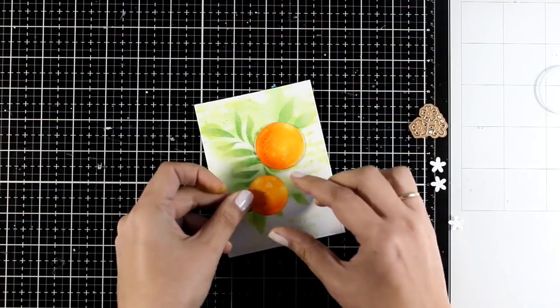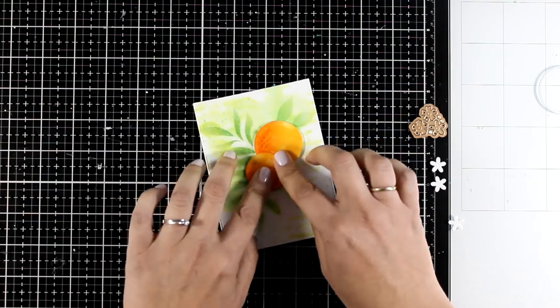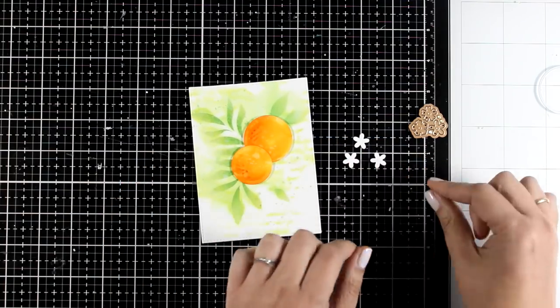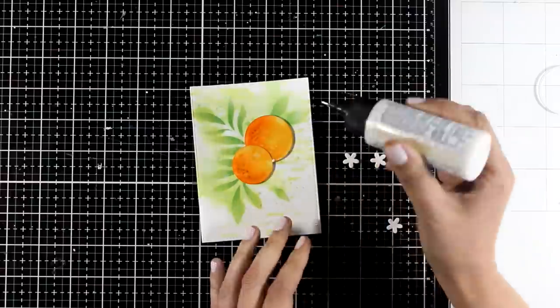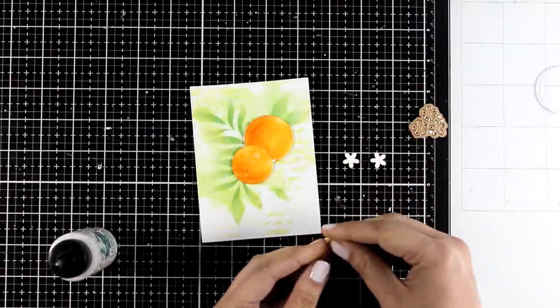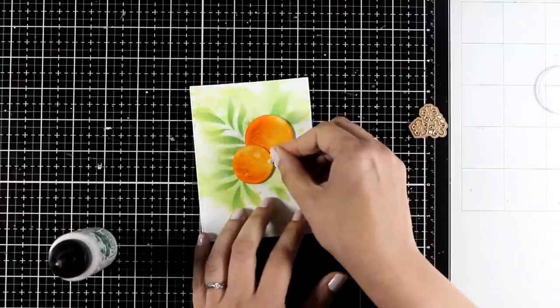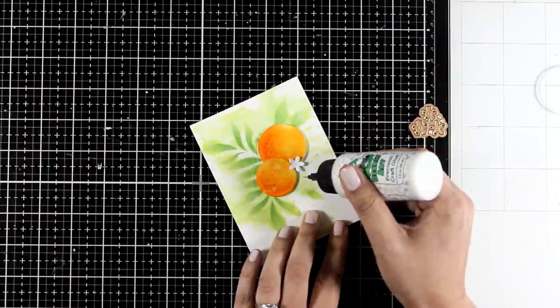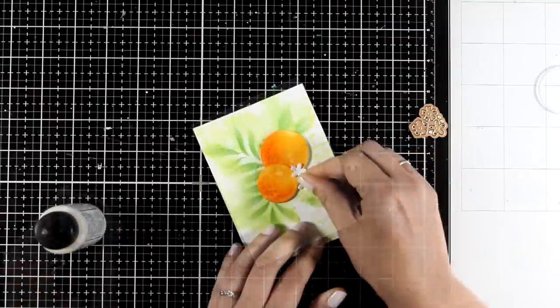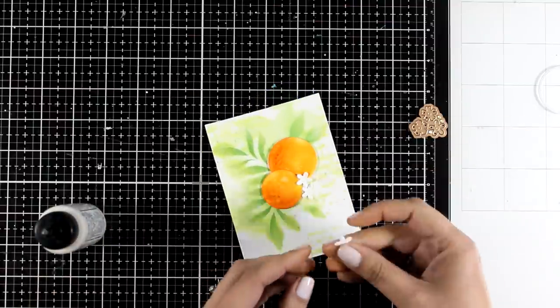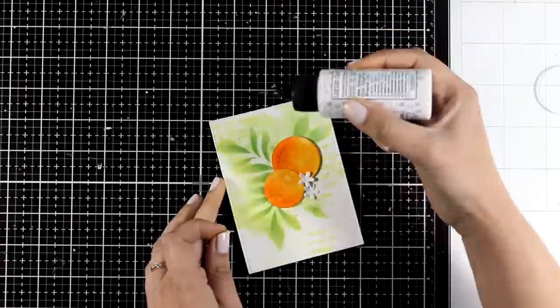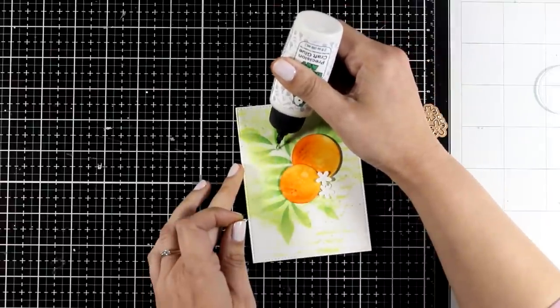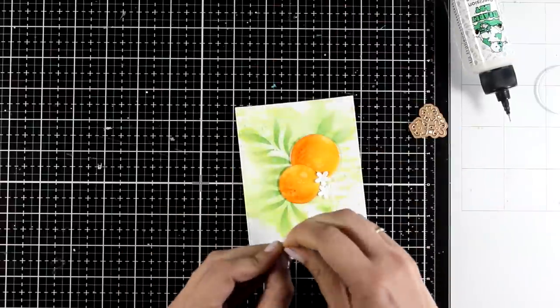But you can definitely go for a flat look if you ink up those oranges directly on top of the background. It could definitely give a more authentic loose watercolor feel. I did die cut a few tiny white flowers, and these dies are from my collection, the Birdhouse collection with Spellbinders.